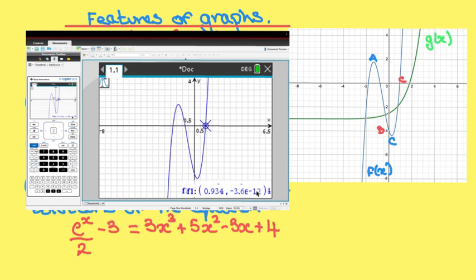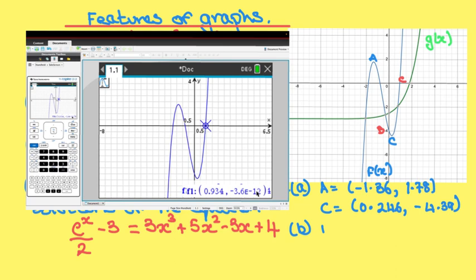Let's write the answers to part a and part b down. So part a, A = (-1.36, 1.78), C = (0.246, -4.39). In part b, B = (0, -4) and D = (0.934, 0).